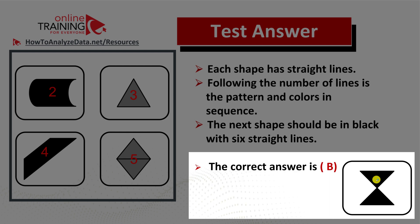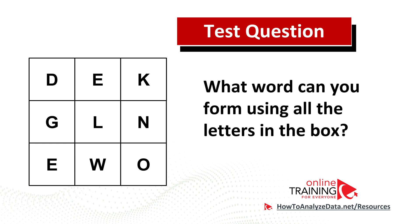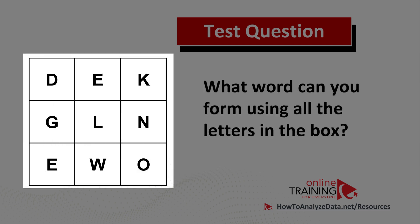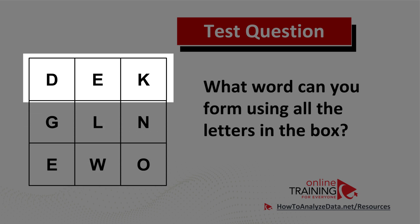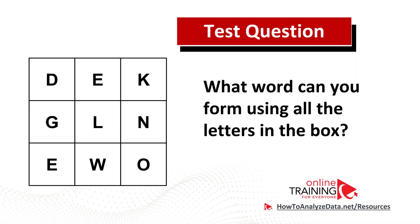So the correct choice here is choice B, sand clock. Hopefully you've nailed this question. Here's a challenge you can solve on your own — what word can you form using all the letters in the box? You're presented with a 3x3 box with the following letters: D-E-K-G-L-N-E-W-O. Feel free to pause this video and post your answer in the comment section; I'll give you my feedback and also post a detailed answer in my future videos, so make sure to subscribe.